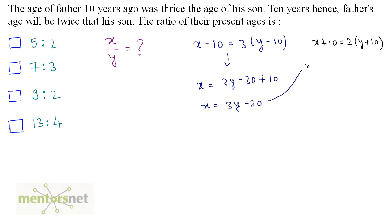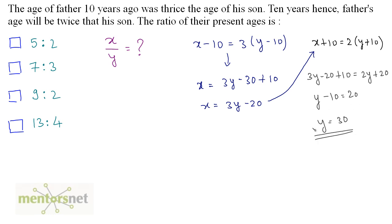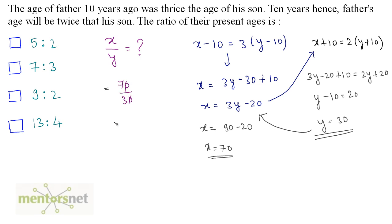We have x's value. Substituting into the second equation: 3y minus 20 plus 10 equals 2y plus 20. So 3y minus 2y equals y, and y minus 10 equals 20, so y equals 30. Then x equals 3 times 30 minus 20 equals 70. We have been asked x by y, which is 70 by 30, and the ratio is 7 to 3. So the answer is option B.